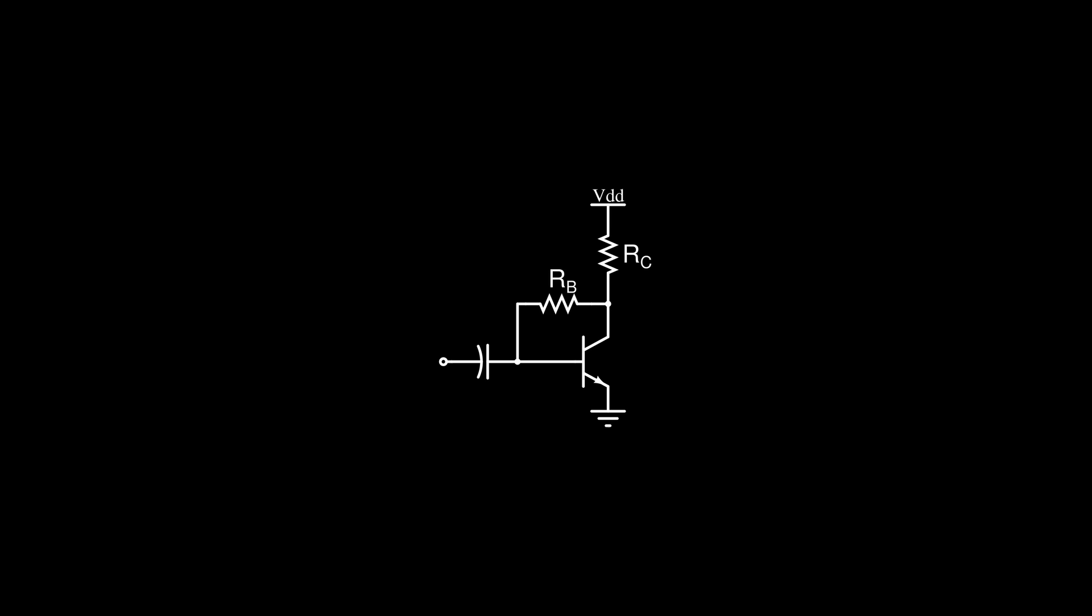Let's try to analyze this configuration here, which seems more promising. By just looking at it, we can understand why. If IC increases for any reason, there will be an increased voltage drop on RC and thus a decrease of the base current, which should stabilize back the collector current.